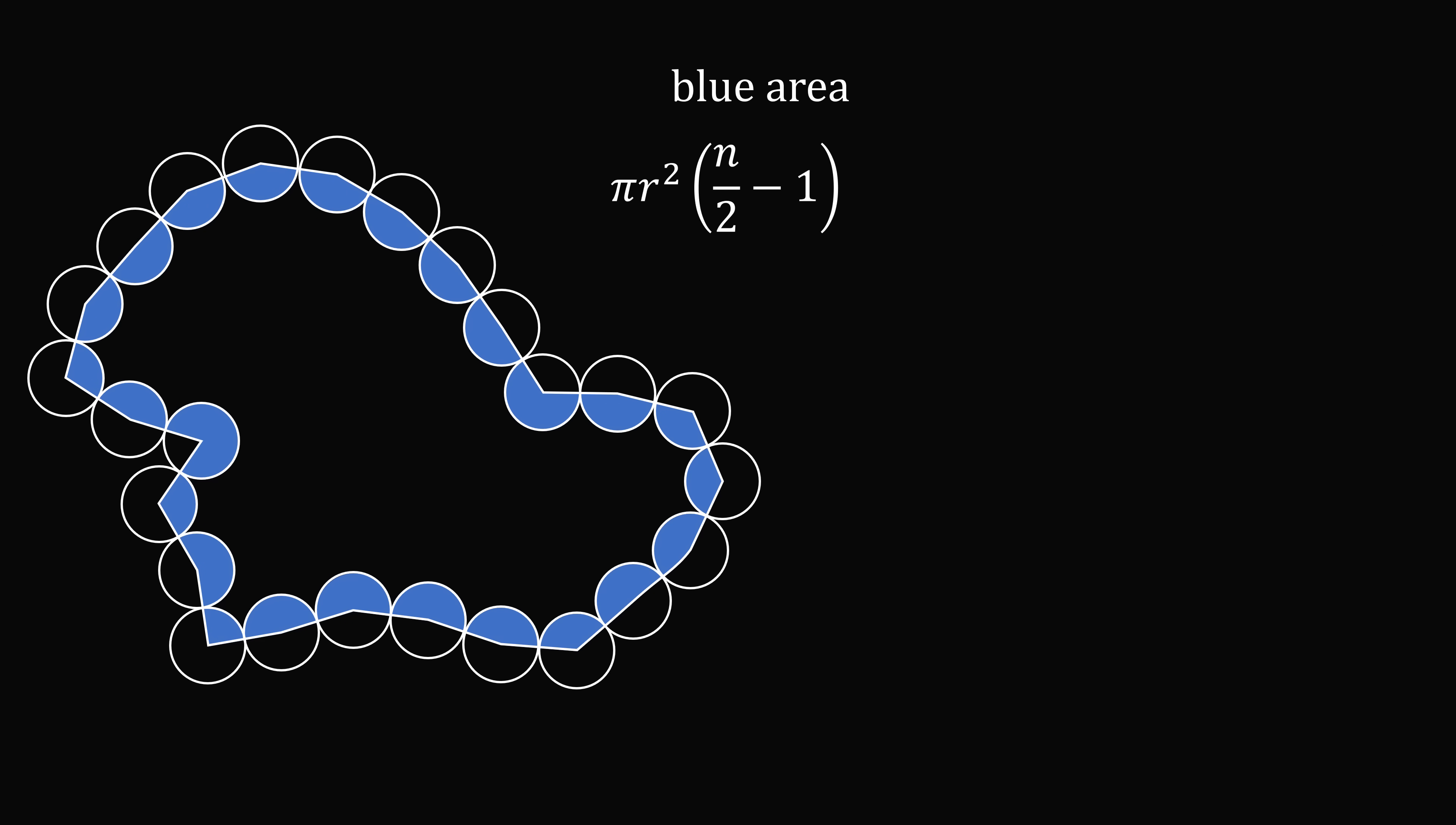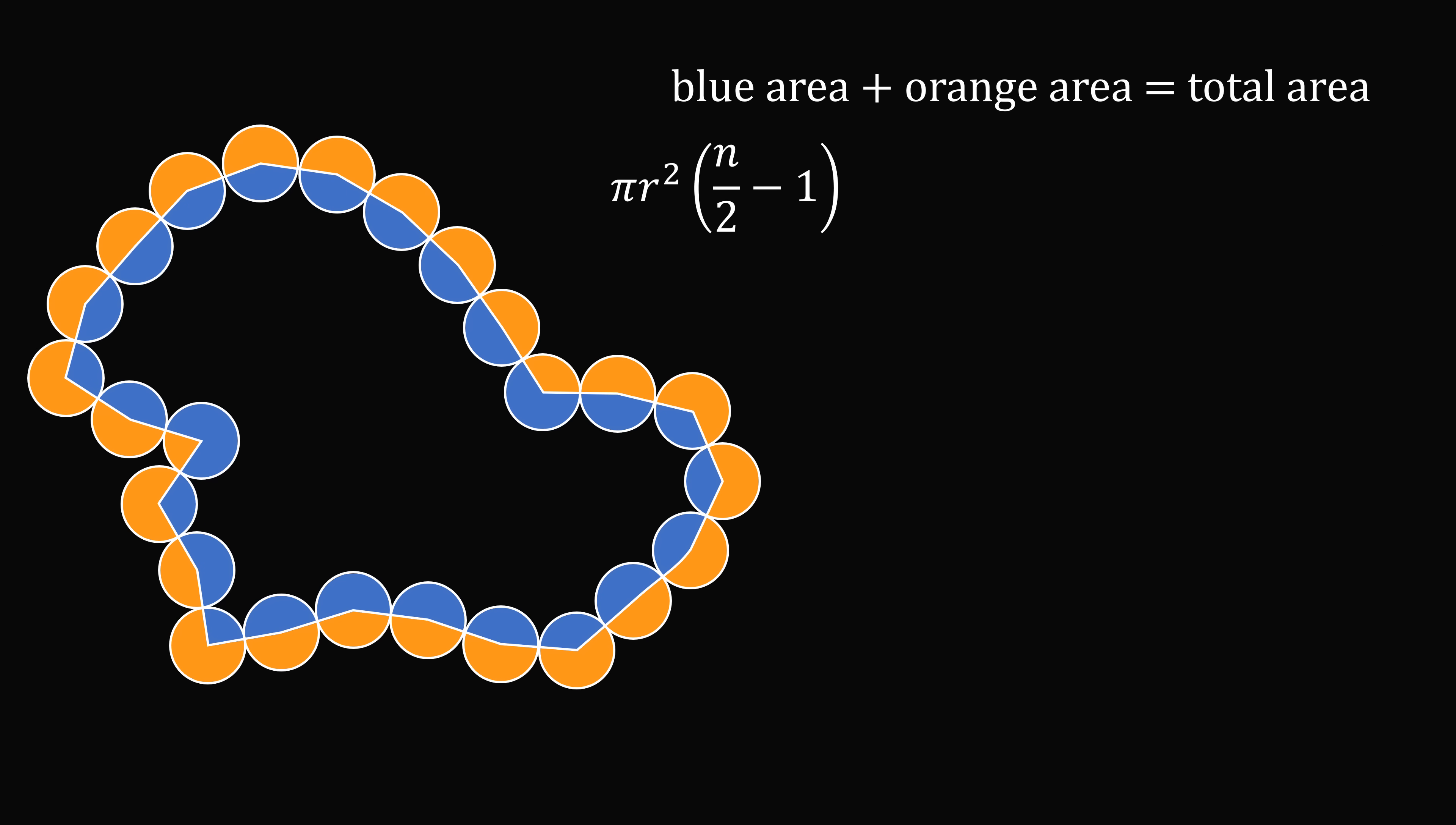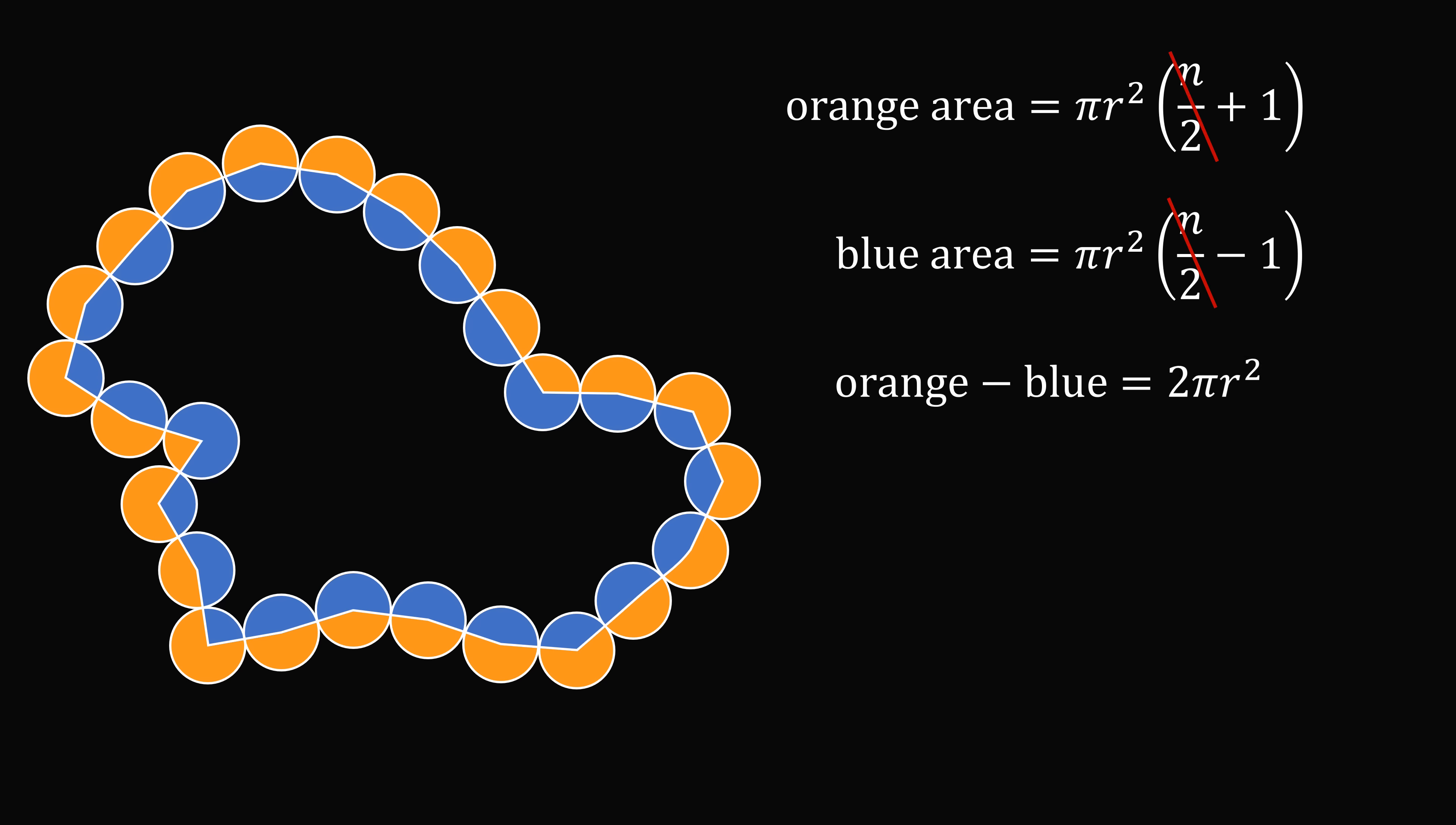So now we know what the blue area is, and we recall that the total area is equal to n multiplied by pi r squared. So we can calculate that the orange area is the total area minus the blue area, and that will work out to be pi r squared multiplied by n over 2 plus 1. And we know that the blue area is equal to pi r squared multiplied by n over 2 minus 1. So we can now take the difference of the two areas. So what is the orange area minus the blue area? The n over 2 terms will cancel out, so we are left with pi r squared multiplied by 2. 2 pi r squared.